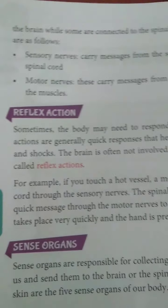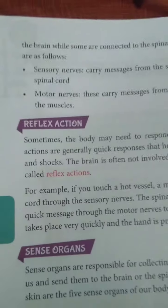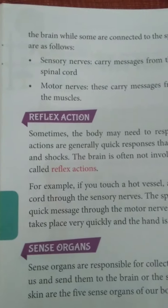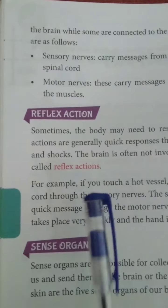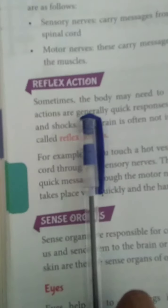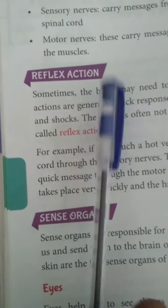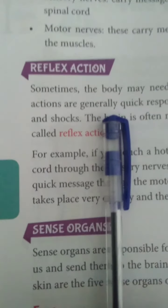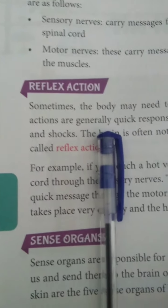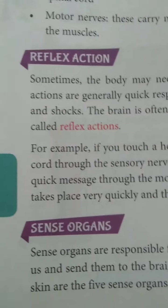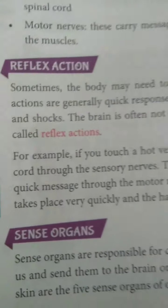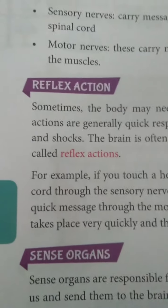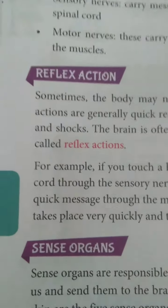These sense organs are responsible for collecting information from the world around us. We see things through our eyes, we listen through our ears. If something has a smell, it reaches our nose. If we are eating something tasty, the tongue tells us it is tasty. The information from our surroundings is collected by these five sense organs.